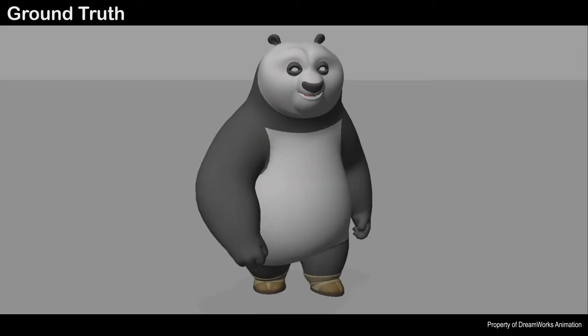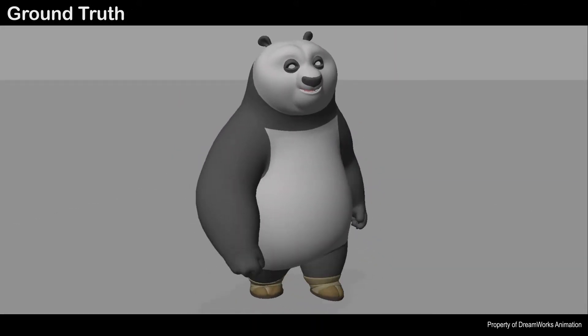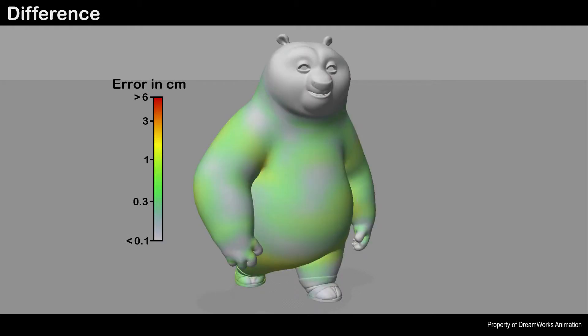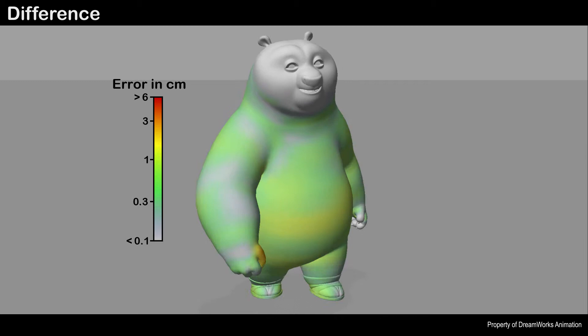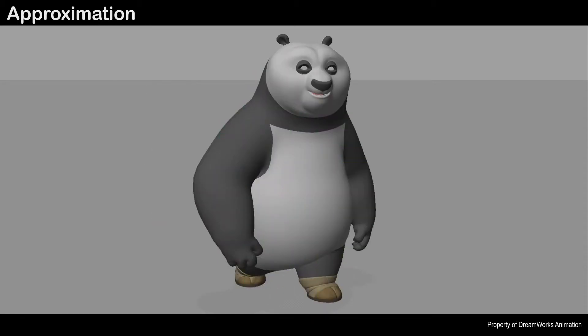Next, we show a similar comparison with the character Po. This character is 1.9 meters tall and the average vertex error of our approximation is 0.16 millimeters in this animation.